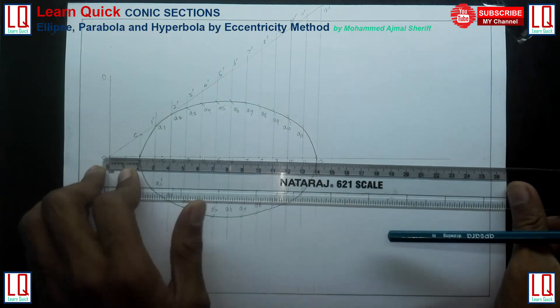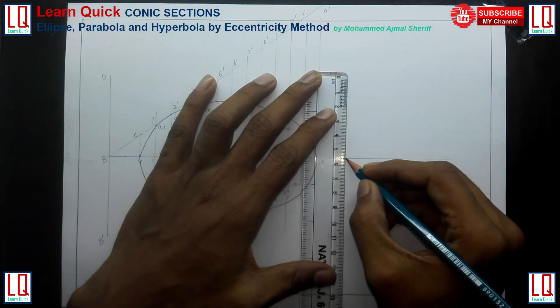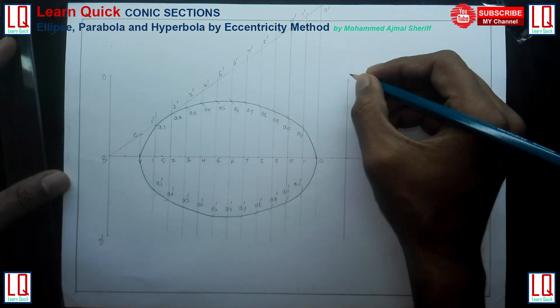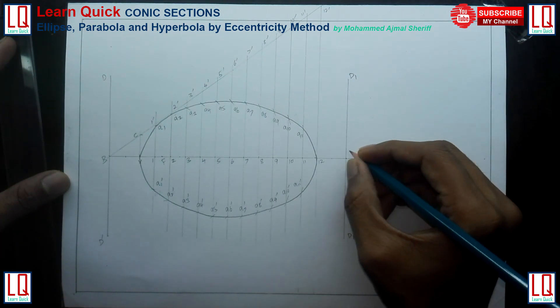Draw another directrix D1, D1 dash, meeting the axis at B1 at a distance from B2 equal to BV.